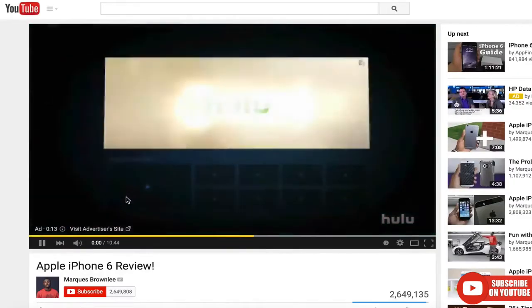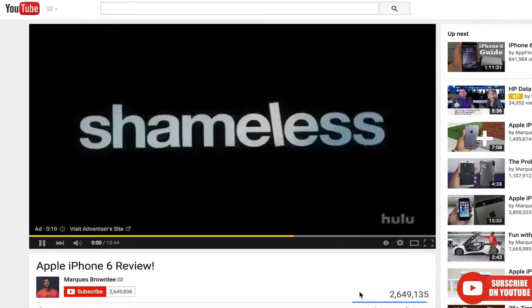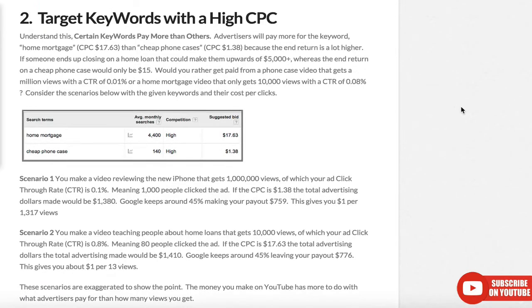So how does that work for you? Let's say you make a video reviewing the new iPhone. It gets a million views, and your click-through rate is a healthy 0.1% — that means a thousand people clicking your ad out of a million who watched it. If your cost per click is $1.38, the total advertising dollars would be $1,380. Google keeps their 45%, so you make $759. That gives you about $1 per 1,300 views.